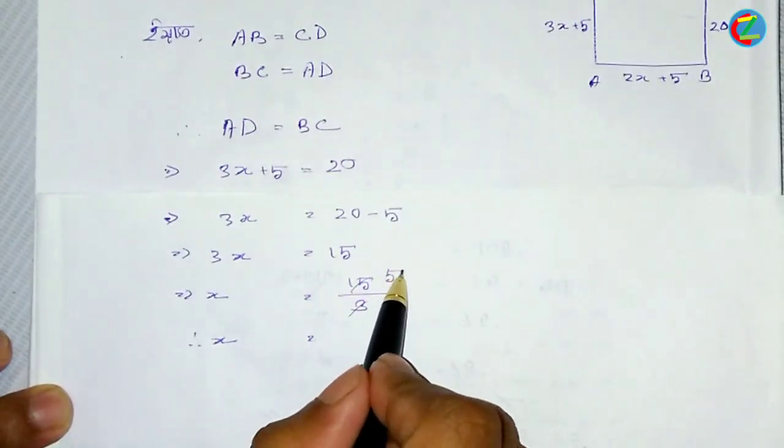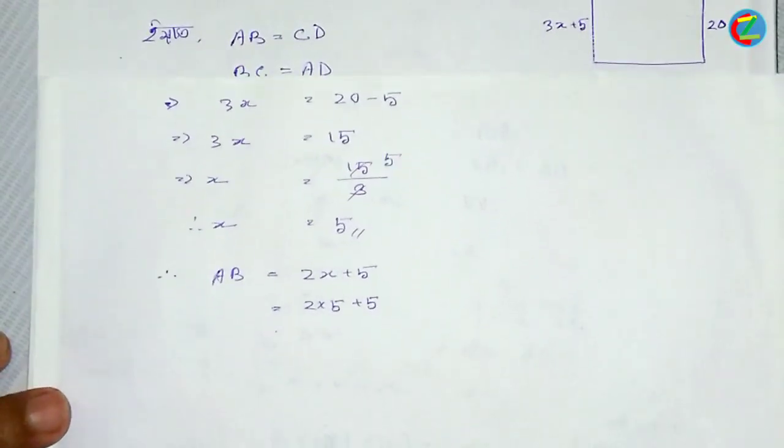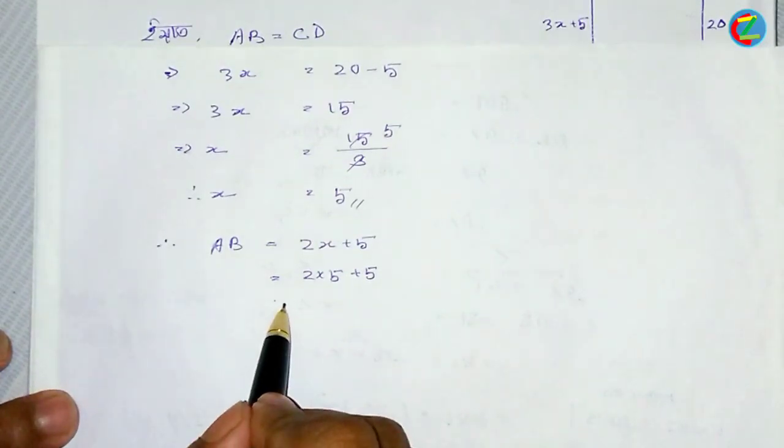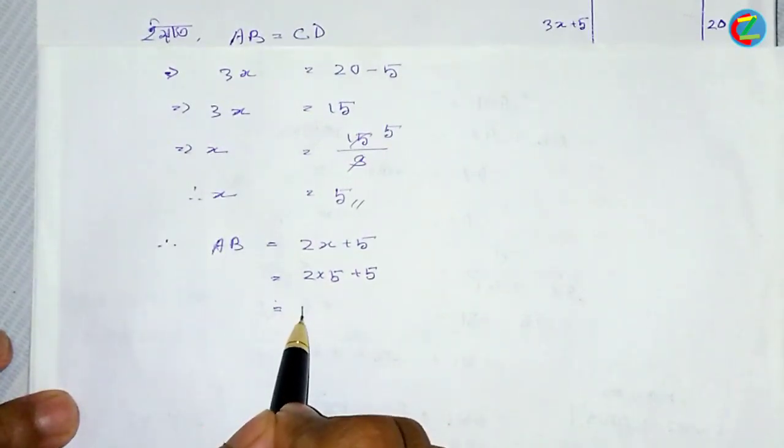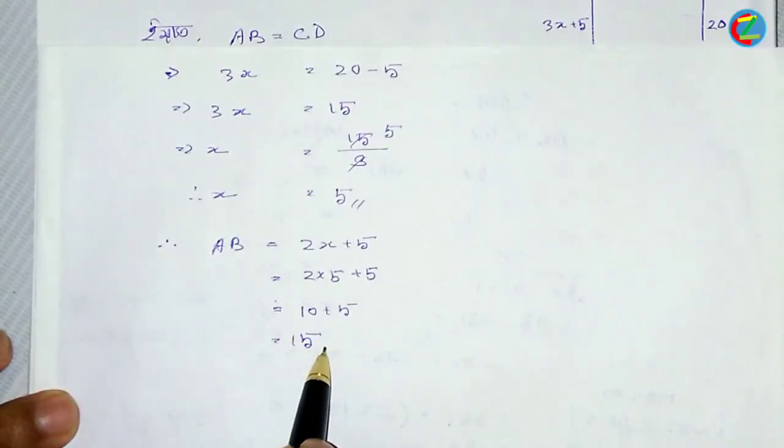What do we need to find? We need to find the opposite. AB is 2 times 5 plus 5, the x is equal to 5. So 2 times 5 plus 5, 10 plus 5 is equal to 15. AB equals 15.